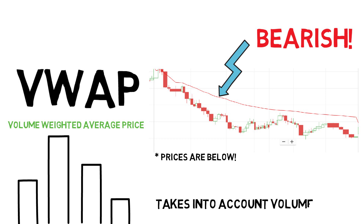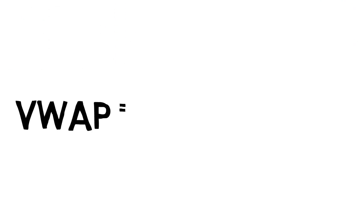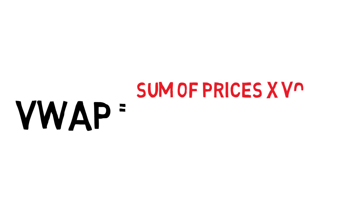The Volume Weighted Average Price appears as a single line on intraday charts, similar to how a moving average looks. However, these two indicators are calculating totally different things.